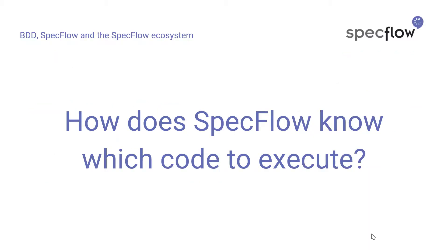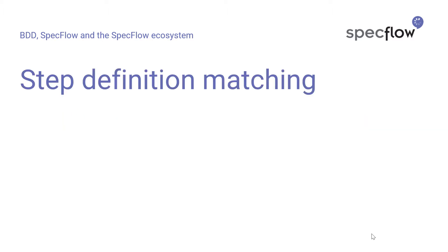In the previous video in this series, we've seen how you can use SpecFlow to auto-generate step definitions for the feature files and scenarios that you want to create executable specifications for. But once you've generated those step definitions, how does SpecFlow know exactly which code to execute when it encounters a specific step? SpecFlow does this by means of step definition matching, and there are three different strategies that you can use.